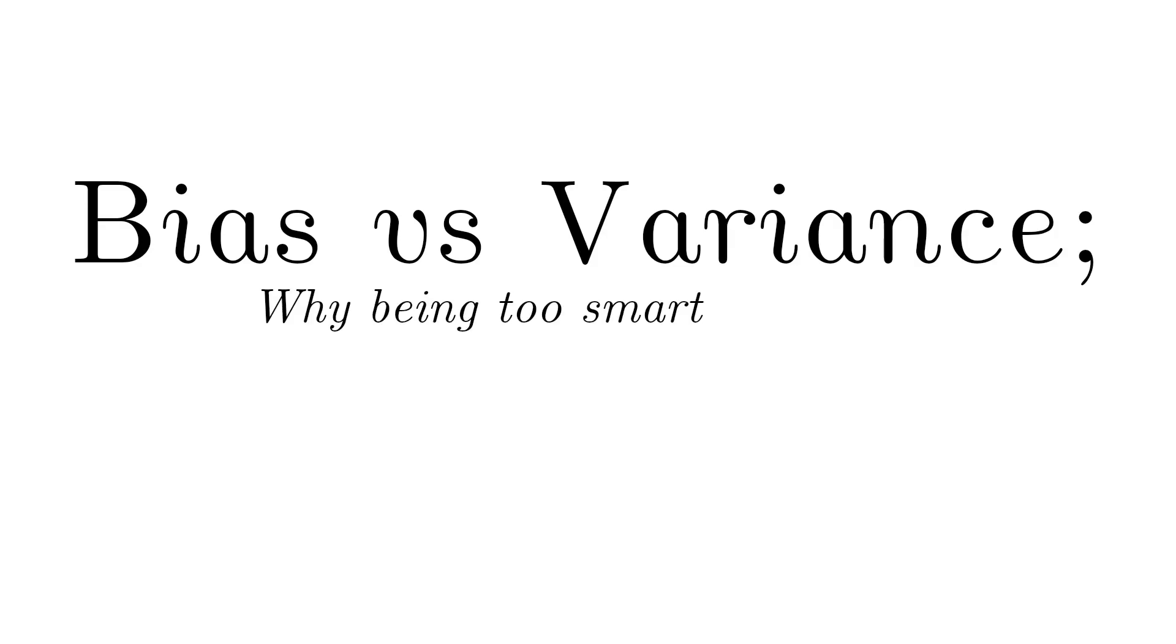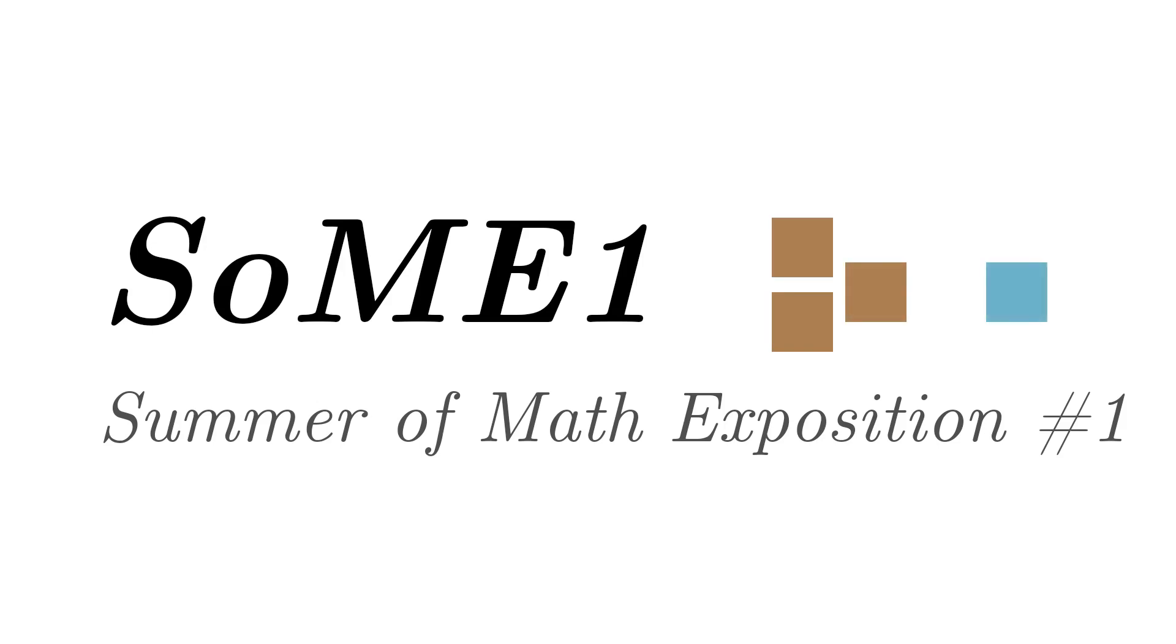Bias versus variance: why being too smart is dumb. This is my contribution to the summer of math exposition. Maybe the title is a little bit clickbaity, I'm sorry, but the concept is really important if you ever want to do something useful in machine learning, so let's get to it.